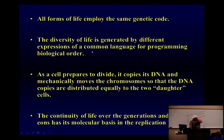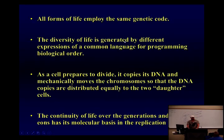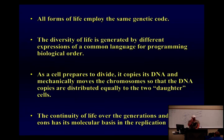The diversity of life is generated by different levels of gene expression — whether genes are turned on or off. You all came from a single fertilized egg, and all the cells that came from that have the exact same DNA. The reason your brain cell is different from your heart cell is because the genes are expressed differently.